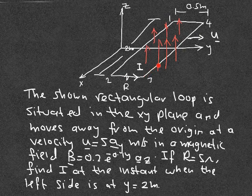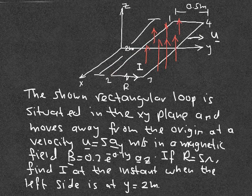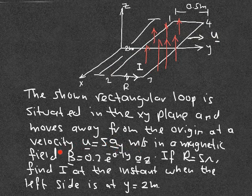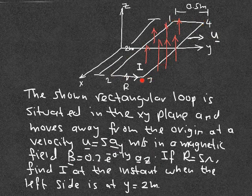What we're going to do differently is consider these as four wires moving in a magnetic field. Each one of those four wires is going to act like a battery, and we can calculate the equivalent field in each wire using the law E_m = u × B. We know the velocity is 5 in the y-direction, and we know B is in the z-direction. We can apply this rule to each of the four wires.